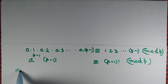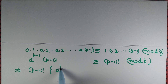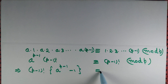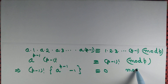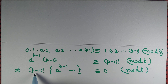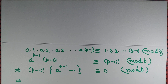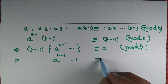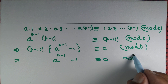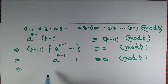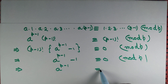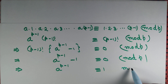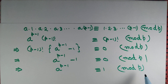Taking (p-1)! to the left hand side, we are left with a to the power p minus 1 minus 1 is congruent to 0 mod p. Since p does not divide (p-1)!, p and (p-1)! are relatively prime, so p must divide a to the power p minus 1 minus 1. That is the same as saying a to the power p minus 1 is congruent to 1 mod p, and we are done.